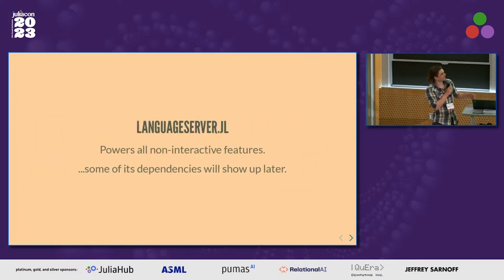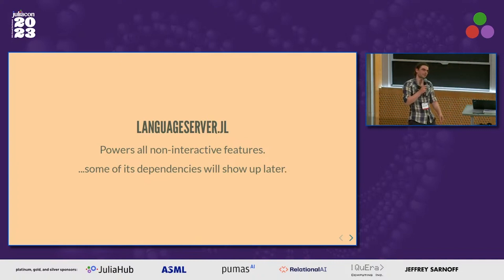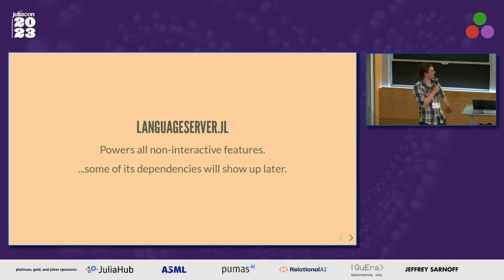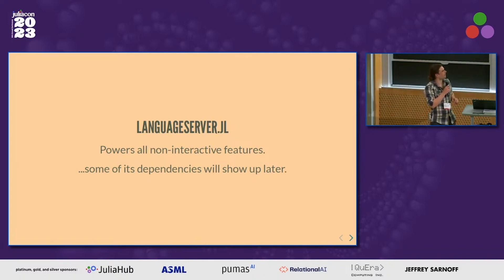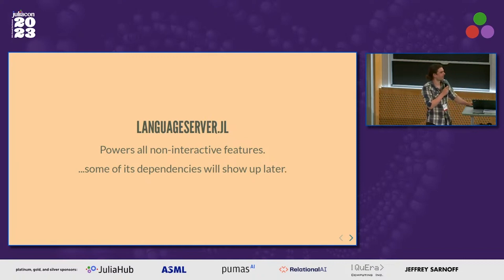All of these static features are powered by LanguageServer.jl, which is a Julia package we wrote. That's the backend that powers all of the static analysis, IntelliSense, and all of that good stuff. It's a pretty good package — it conforms to the spec. Some of its dependencies, however, will show up later in this talk, which you can probably guess which category that will be.